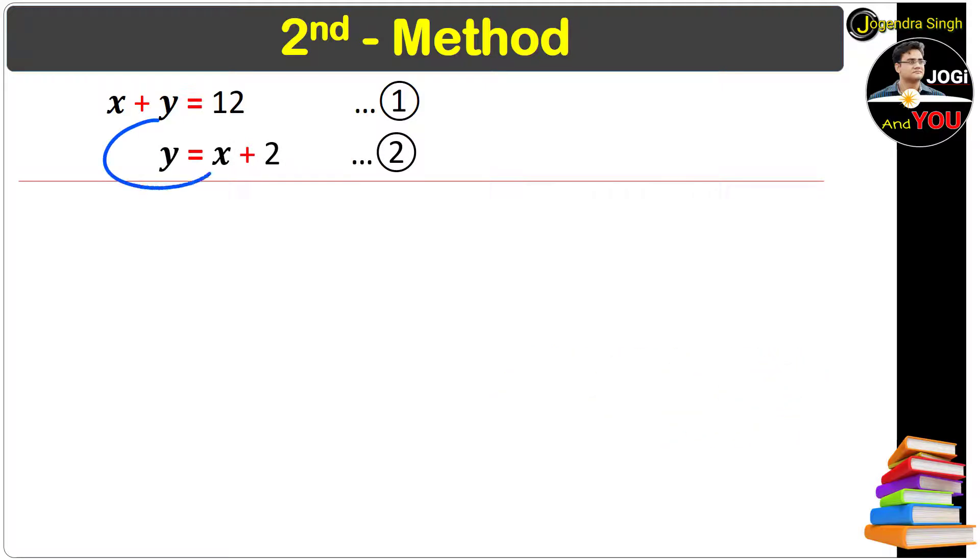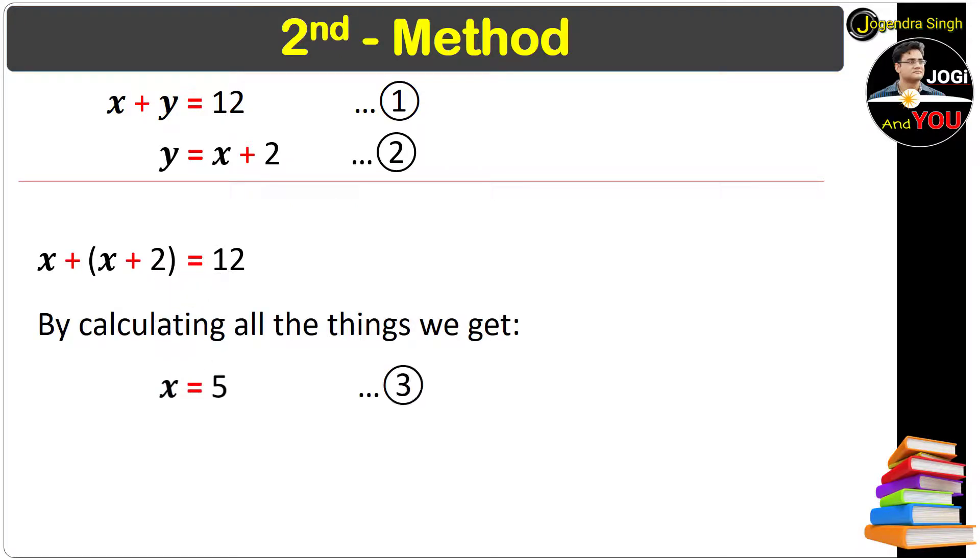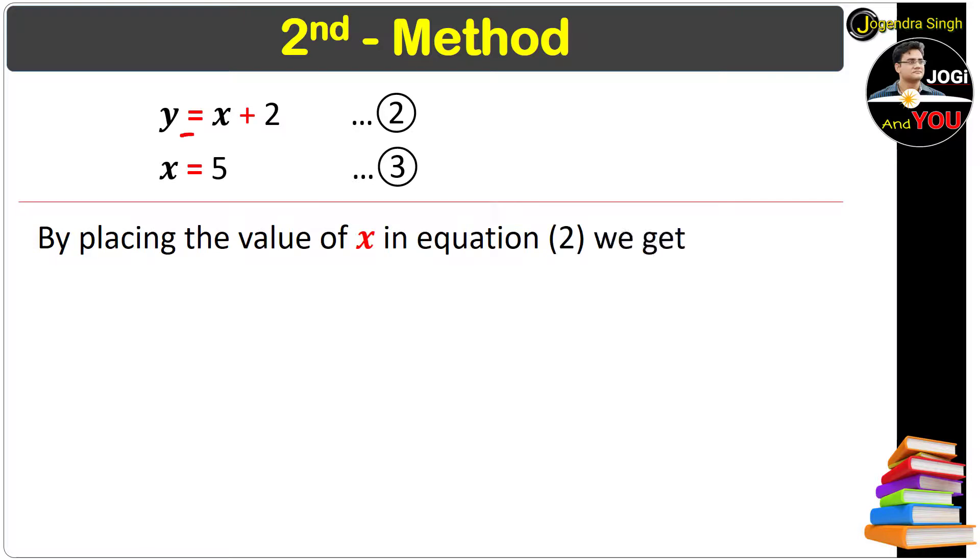By placing this value of y from the second equation to the first equation we get this condition. And by calculating all the things we get x is equal to 5. Get this up. By placing the value of x in equation 2 we get y is equal to 7.